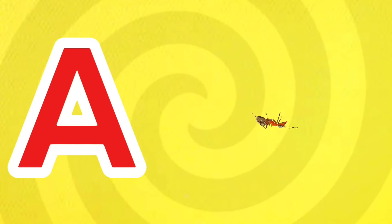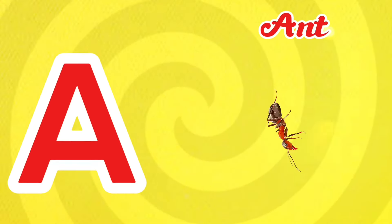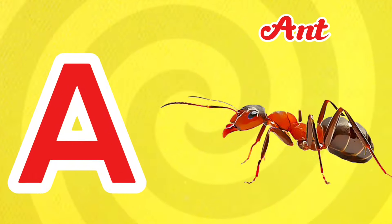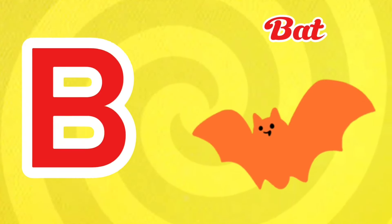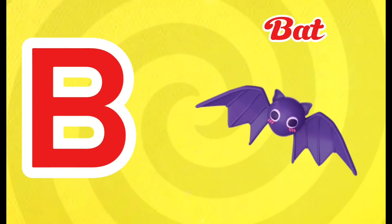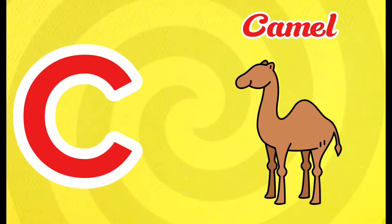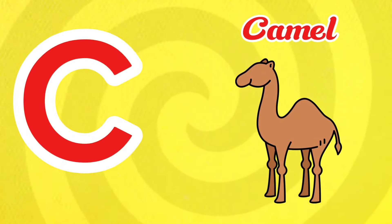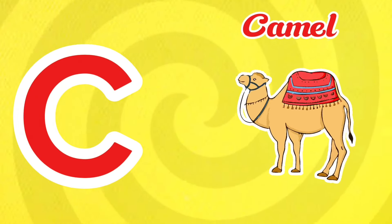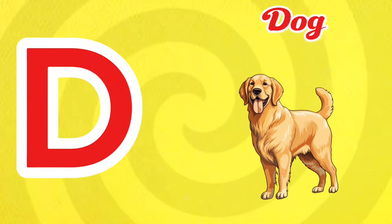A is for Ant. Ant. Ant. A is for Ant. Ant. B is for Bat. B-bat. B is for Bat. B. C is for Camel. C. Camel. C is for Camel. C.